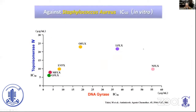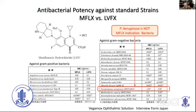Looking at the generations of quinolones — first, second, third, and fourth — third generation does not mean it is weaker than the fourth generation. For example, comparing besifloxacin official data in Japan: looking at Pseudomonas aeruginosa sensitivity MIC, levofloxacin is far more sensitive to Pseudomonas aeruginosa than moxifloxacin in terms of MIC.